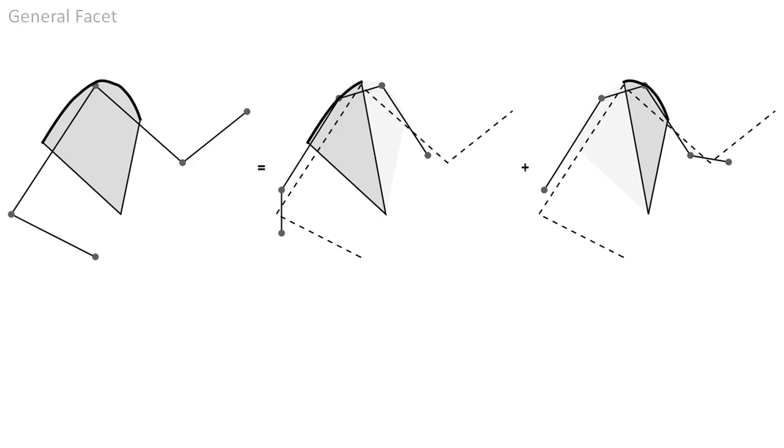One round of subdivision carries out precisely this binary split, just that generally more than two control points are required. In the example illustrated, five control points determine the facet of the cone.